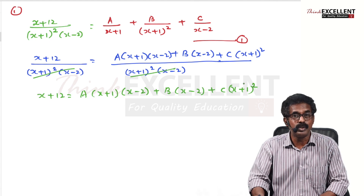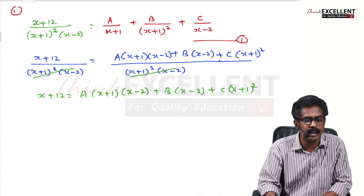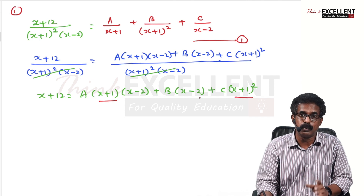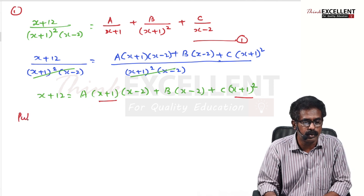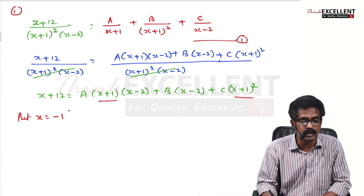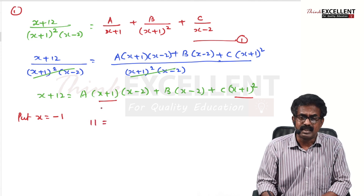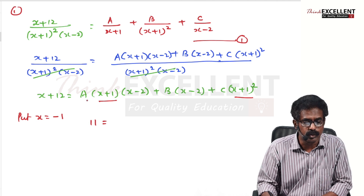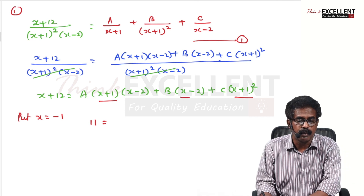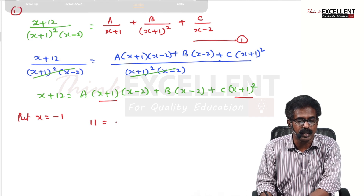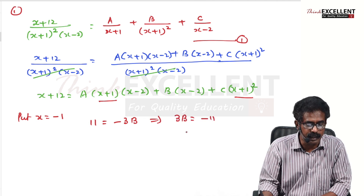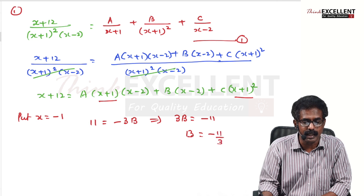Now substitute values one by one to find A, B, C. The factor (x + 1) appears twice, so put x = −1 to make it zero. The left side gives −1 + 12 = 11. The first and last terms become zero, leaving only B·(−1 − 2) = −3B. So 11 = −3B, giving B = −11/3.